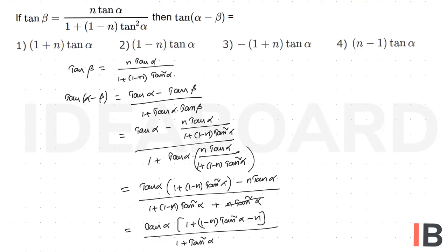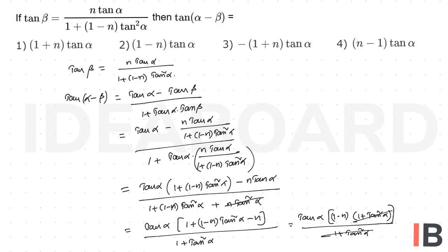This simplifies to tan α·(1 minus n)·(1 plus tan²α), with the denominator also being 1 plus tan²α. The (1 plus tan²α) terms cancel, giving the result: (1 minus n)·tan α. The correct answer is the second option.